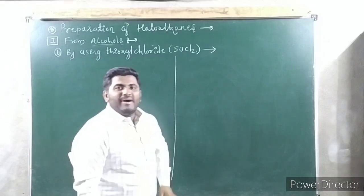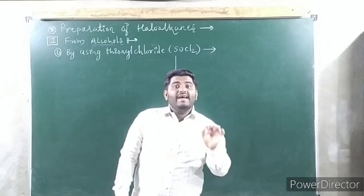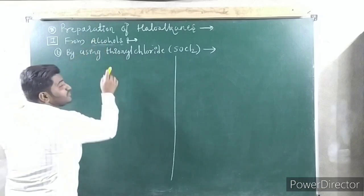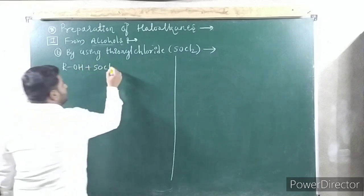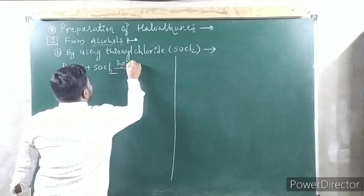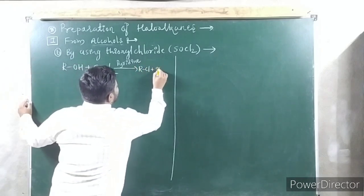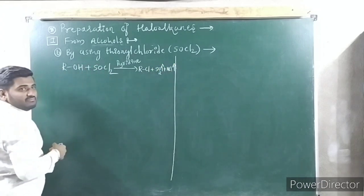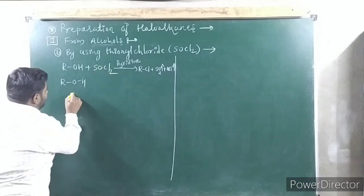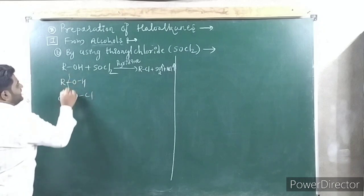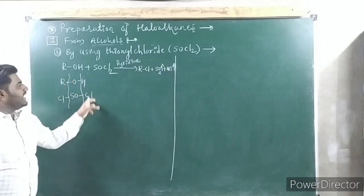Next method is from alcohols only, but using thionyl chloride. 'Thio' is a nickname for sulfur — thionyl chloride is SOCl₂. You take ROH and add SOCl₂ in the presence of pyridine. What happens? RCl is formed along with SO₂ (gas) and HCl (gas). You break the bonds: R takes one Cl, and you get RCl + SO₂ + HCl as byproducts.